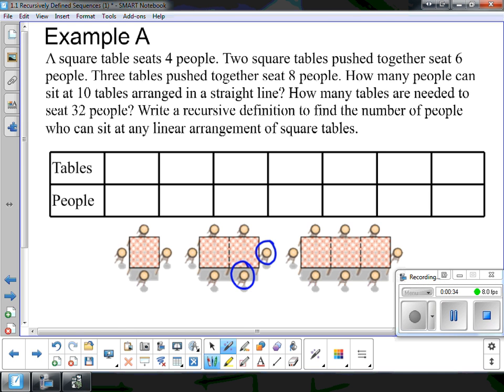We can then seat how many? One, two, three, four, five, six, seven, eight. So one table seats four, two tables can accommodate six people, three tables can accommodate eight, and so on.